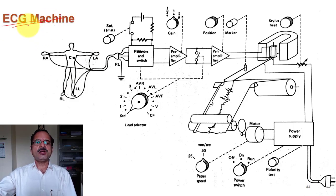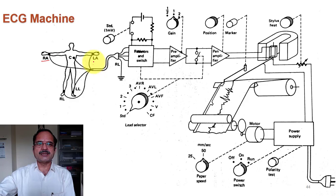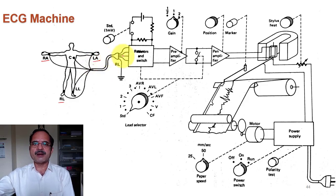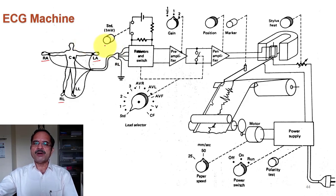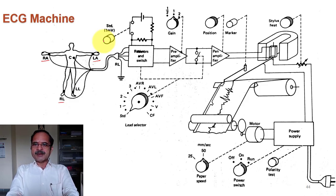Till now we have discussed the electrodes and how they are placed — these are the limb leads: right arm, left arm, right leg and so on. These connections are made to the machine. This block diagram shows how a typical ECG machine works. There are nowadays many more advanced versions, but this diagram shows the very basic type of ECG machine.